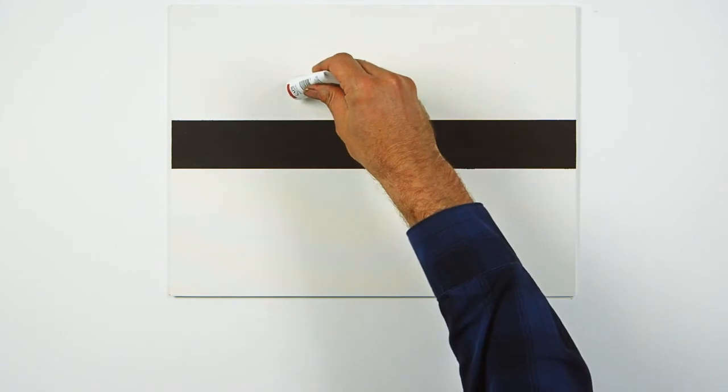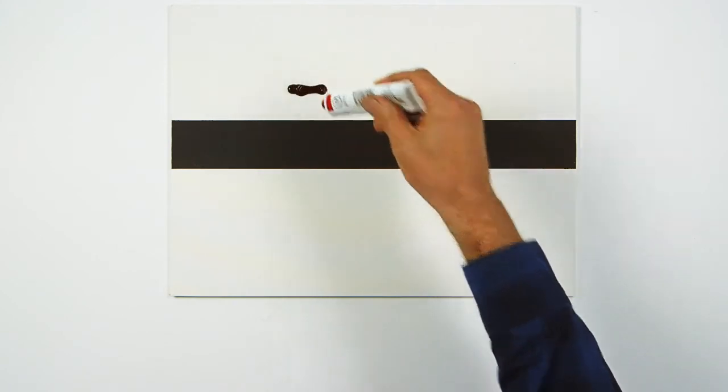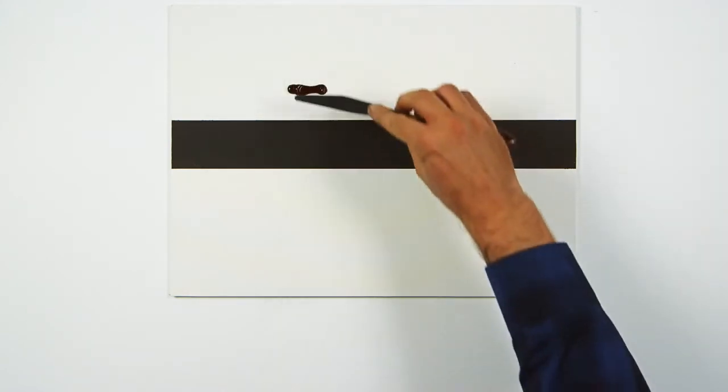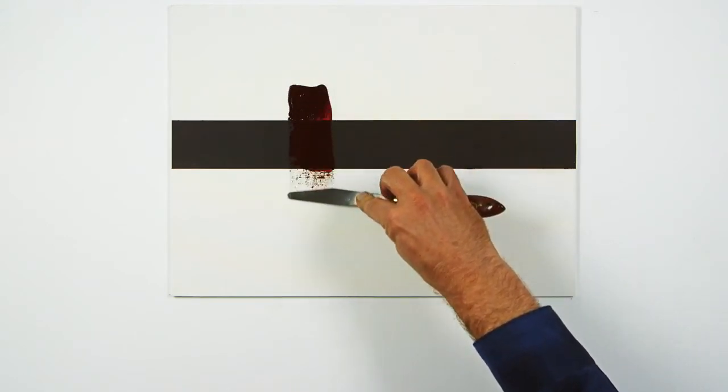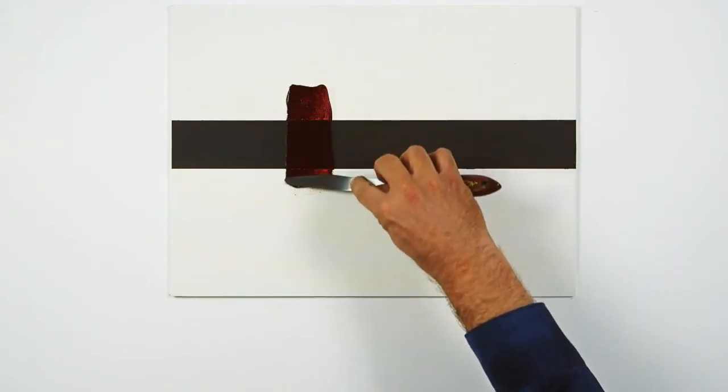Hi, have you ever wondered why certain colours display transparency while others are opaque? Transparency is the effect of light being transmitted through the paint film.